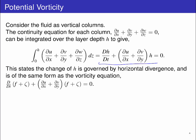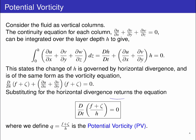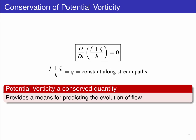Now, this equation has the same form as the vorticity equation. We can use the horizontal divergence term to combine the two equations to get this expression. The total time derivative of (f plus zeta) on H is equal to zero. This term, (f plus zeta) on H, is defined as Q, and is called the potential vorticity.